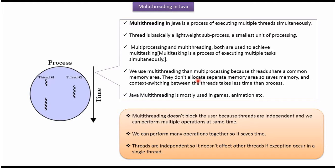We use multi-threading over multi-processing because threads share a common memory area. They don't allocate separate memory area so it saves memory. And context switching between threads takes less time than process.